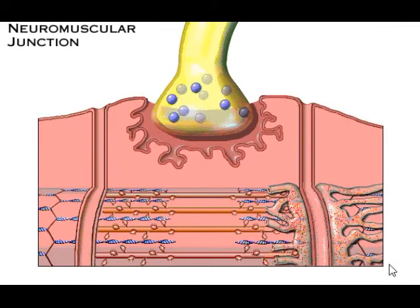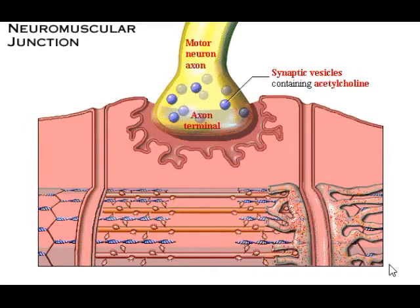Now let's take a closer look at a neuromuscular junction. The swollen distal end of the motor neuron axon is called the axon terminal. Within the axon terminal are synaptic vesicles containing the neurotransmitter acetylcholine. Notice that at the neuromuscular junction, the motor neuron and the sarcolemma of the muscle cell do not actually touch. The synaptic cleft is the space between the axon terminal and a folded region of the sarcolemma called the motor end plate, highlighted here in red.